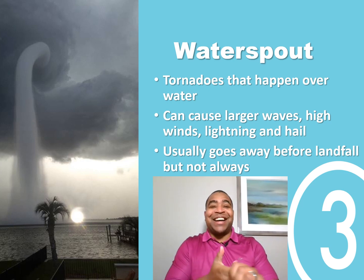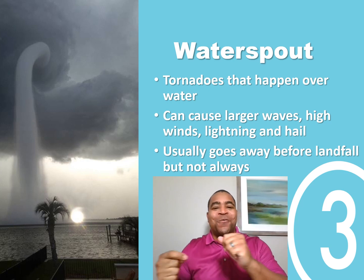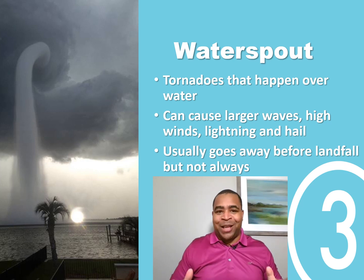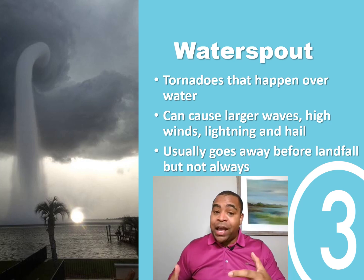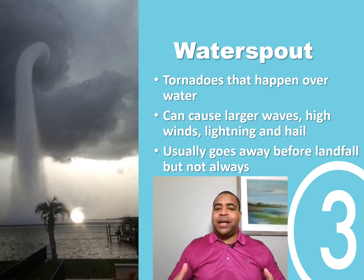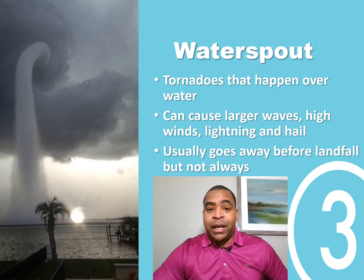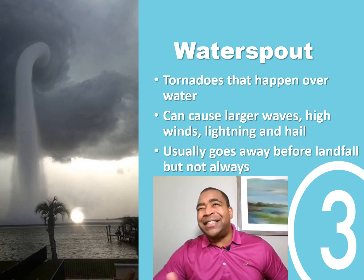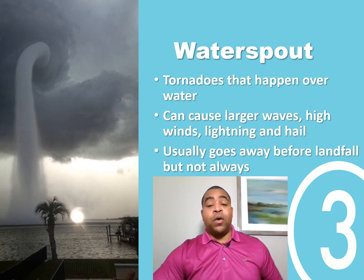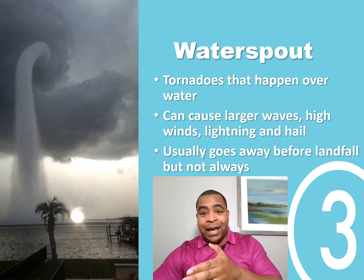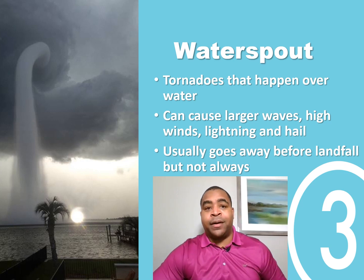Let's talk about waterspouts. Waterspouts are tornadoes that happen over water — they do not happen over land, but they can still cause a lot of damage. They can cause large waves, high winds, and can also include some lightning as well as some hail. Usually they dissipate right before they hit land, but not always — we have had cases where waterspouts have moved over land and then become tornadoes, and then gone back over water.